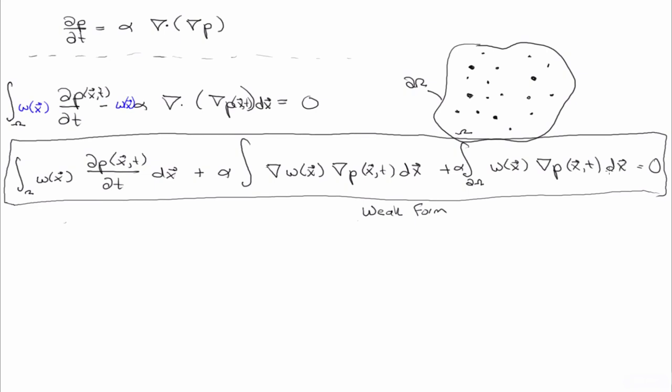But later in the class, we'll also talk about the finite volume technique and finite element technique. And this weak form equation allows us a way to unify, or to have a formal unification of the three discretization techniques that we're going to talk about.